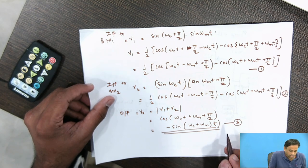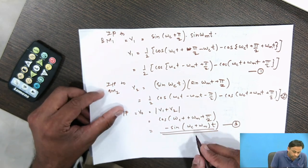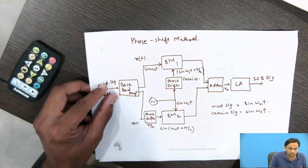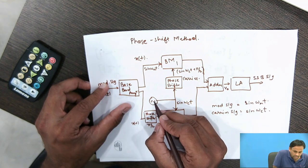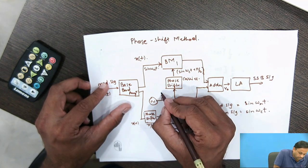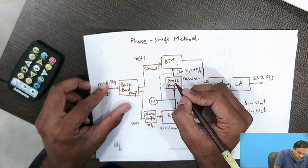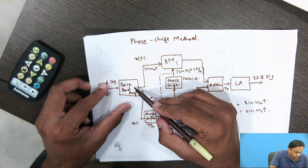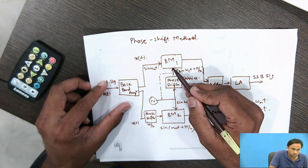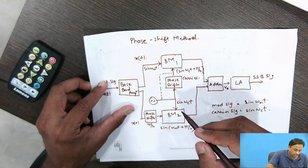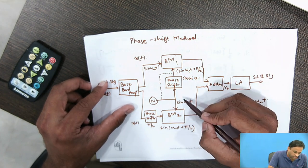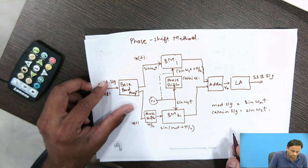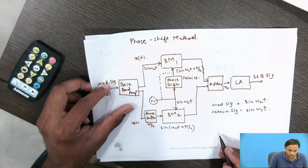To produce the lower sideband instead of the upper sideband, one change is made in the diagram: for BM1, both the modulating signal and carrier signal are given directly (no phase shift), while for BM2, both the carrier signal and the modulating signal are phase shifted.